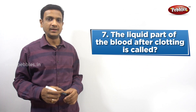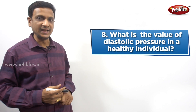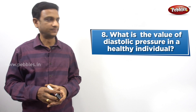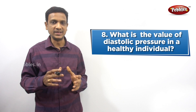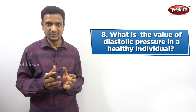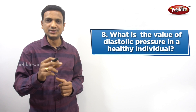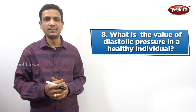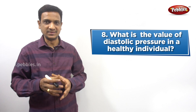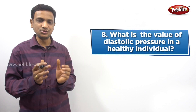The next question: what is the value of diastolic pressure in a healthy individual? The pressure exerted by the blood in the blood vessels - this blood pressure exists in two forms: diastolic pressure and systolic pressure. These correspond to two different stages of heart pumping.